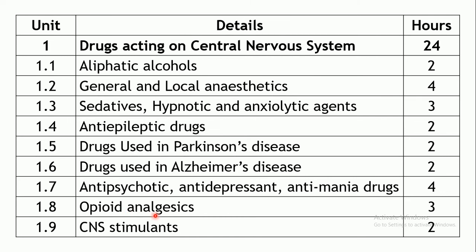The next chapter is opioid analgesics — painkillers that can abolish pain. Opioid analgesics act by central mechanisms and are therefore discussed under CNS drugs. Three hours are allotted, during which morphine will be studied in detail along with other drugs like codeine, pethidine, and so on.